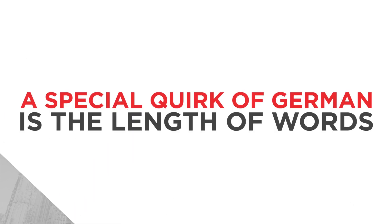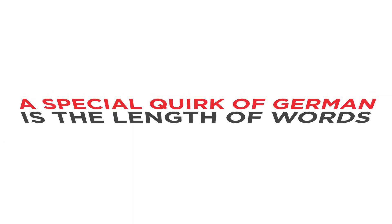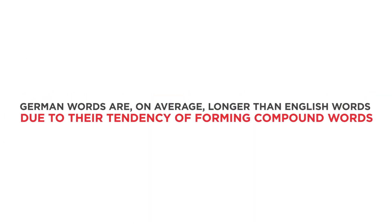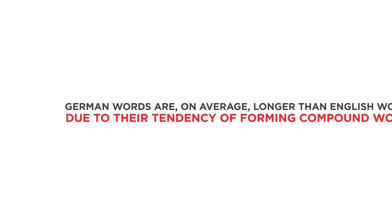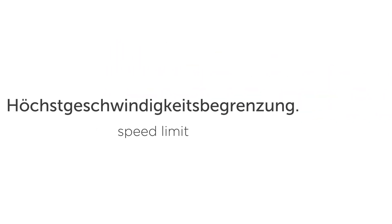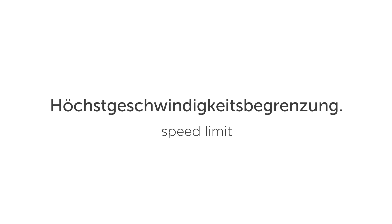A special quirk of German is the length of words. German words are, on average, longer than English words due to their tendency of forming compound words. English usually limits compounding to two words, such as 'snowman' or 'baseball.' There is no such limit in German, however. Take the word for 'speed limit' for example: Höchstgeschwindigkeitsbegrenzung.